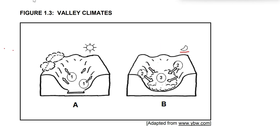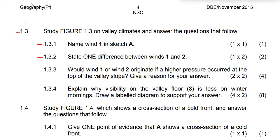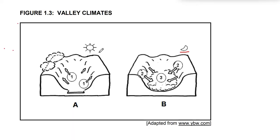Question 1.3.3: Would Wind 1 or Wind 2 originate if there were higher pressure at the top of the valley slope? Give a reason for your answer. If there is high pressure on top of the mountain, you know that cold, dry air is denser. If it is denser, there will be high pressure, and that air will be obliged to move down the hill.